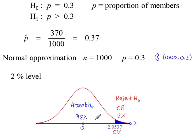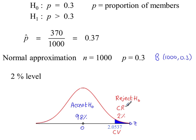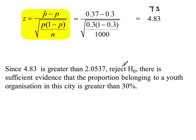Now we need to work out our test statistic z using the formula. So here's the test statistic, 4.83. And 4.83 is in the rejection region. It's greater than 2.0537. So we reject H0. There is sufficient evidence that the proportion belonging to a youth organisation in this city is greater than 30%.